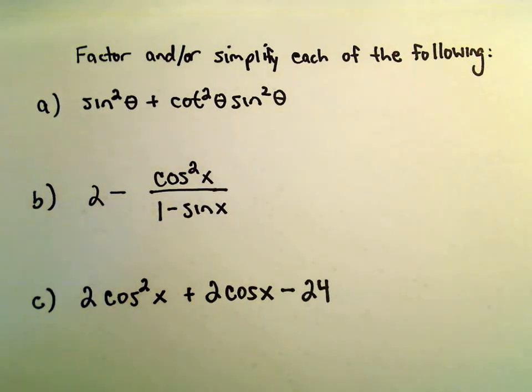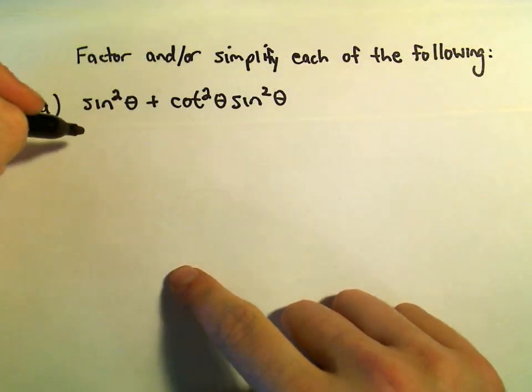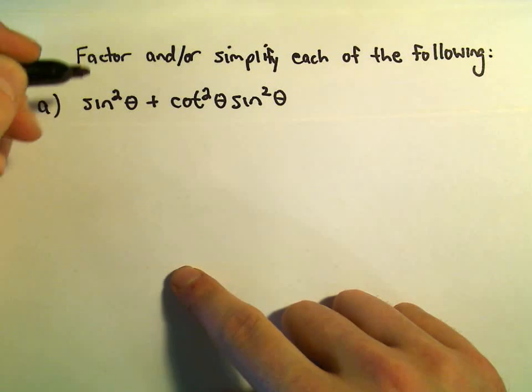So in part A here, we have sine squared plus cotangent squared times sine squared. Now, I think we can certainly factor a sine squared out. Maybe even, I don't know if it's any quicker or any easier.